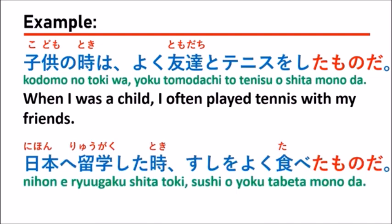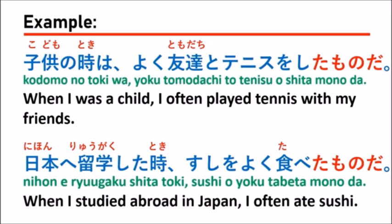日本へ留学した時、寿司をよく食べたものだ, which means 'When I studied abroad in Japan, I often ate sushi.' Here, the verb 食べる is in dictionary form. When changed to past tense, it becomes 食べた. Followed by ものだ, we get 食べたものだ — meaning 'the thing that you ate in the past,' such as eating sushi while studying abroad in Japan.